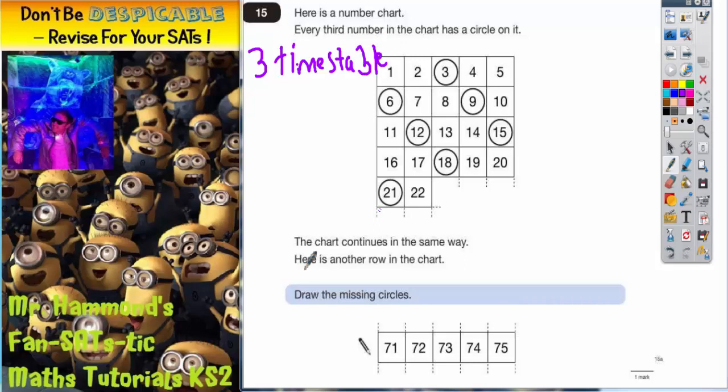Now it says the chart continues in the same way. Here is another row in the chart. Draw in the missing circle.